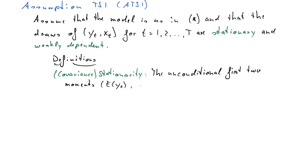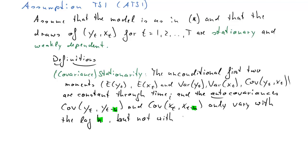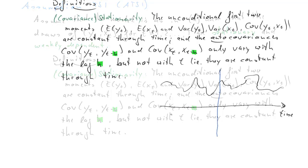The assumption is that unconditional first two moments, that's the expected value of yt and xt and the variance of yt and the variance of xt, as well as the covariance between yt and xt, that these characteristics are constant through time and do not depend on time. And also that the auto covariance, that's the covariance between yt and itself h periods previously, only changes with that lag h but is otherwise not dependent on time.